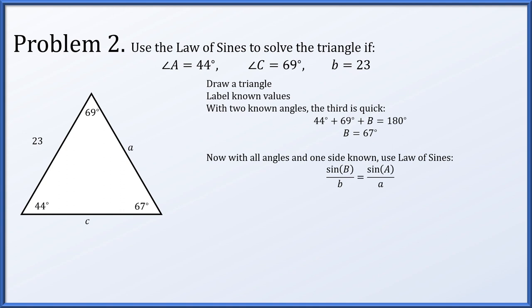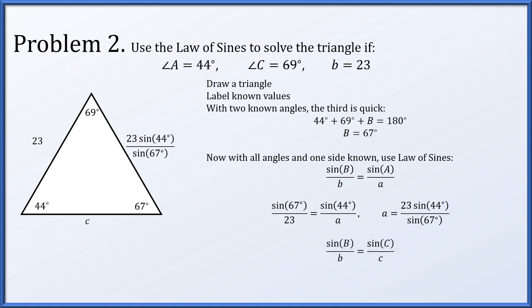The sine of B over b equals the sine of A over a. Replacing known values, the missing length a is 23 times the sine of 44° divided by the sine of 67°. Likewise, the sine of B over b equals the sine of C over c. Plugging in the values and solving for missing side length c gives 23 times the sine of 69° divided by the sine of 67°. So now we have solved for all angles and all sides.